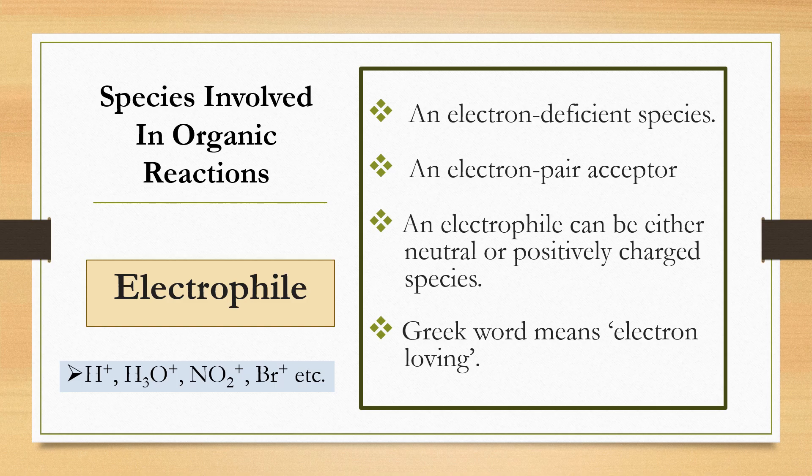Now let's look at the species involved in organic reactions. The first one is the electrophile. An electrophile is an electron-deficient species — it lacks electrons. An electrophile is an electron-pair acceptor and can be either neutral or positively charged. In Greek, electrophile means 'electron-loving.' Examples of electrophiles include hydrogen ion (H⁺), hydronium ion, NO₂⁺ ion, and NBr⁺ ion — any species with a positive charge is an electrophile.